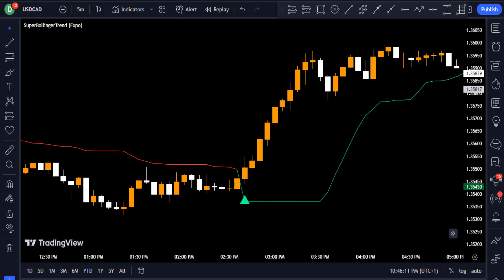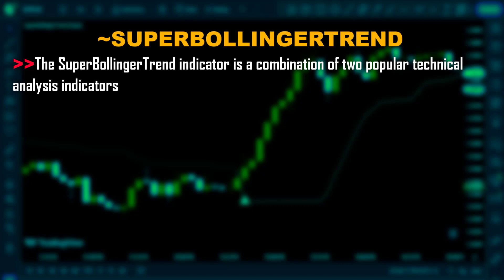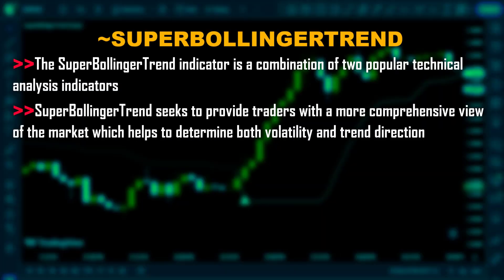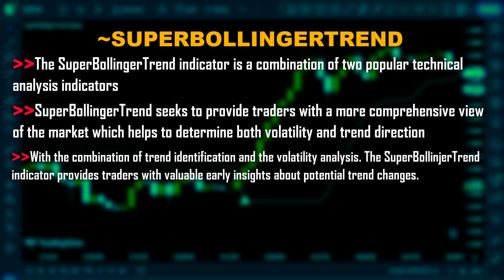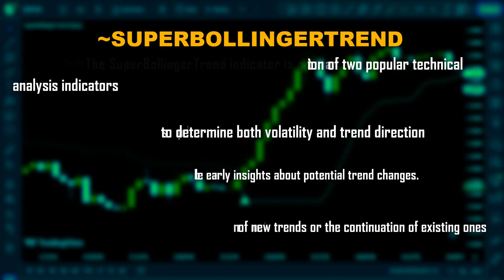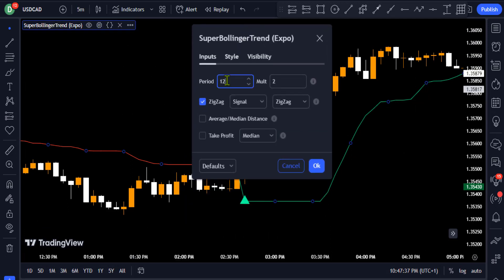The Super Bollinger Trend indicator is a combination of two popular technical analysis tools: the Bollinger Bands and the SuperTrend. By combining these two indicators, Super Bollinger Trend provides traders with a more comprehensive view of the market, helping determine both volatility and trend direction. It provides valuable early insights about potential trend changes, recognizing that high volatility often accompanies stronger price momentum. Head to the indicator's settings and change the period to 10.